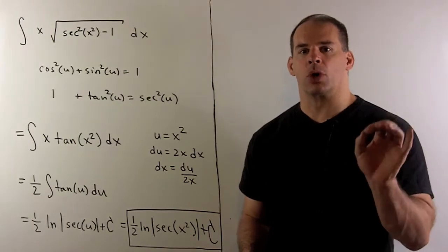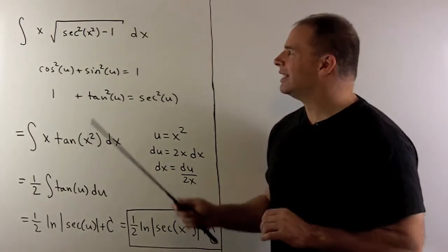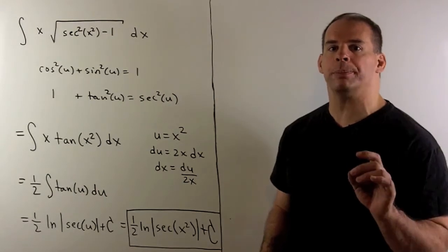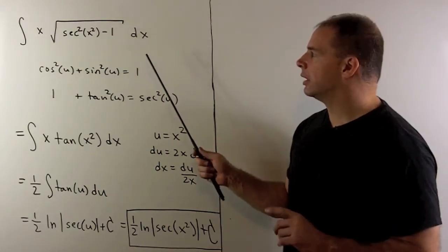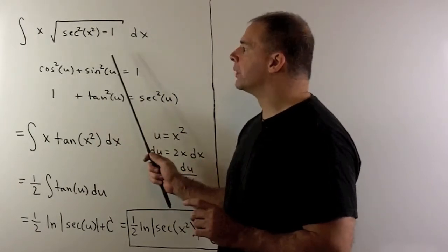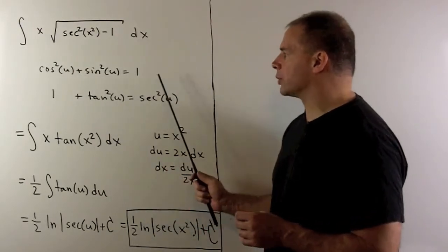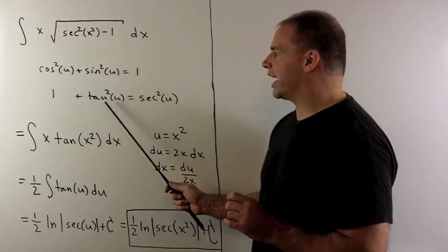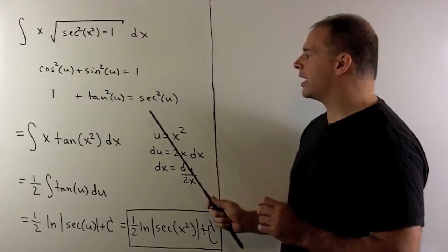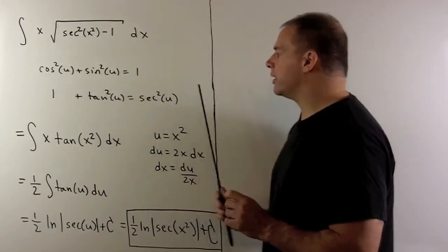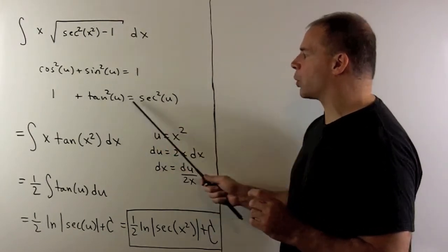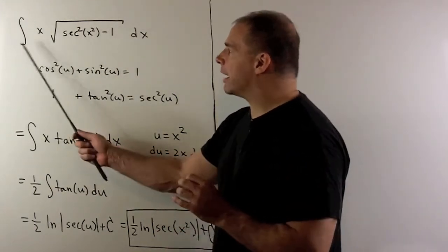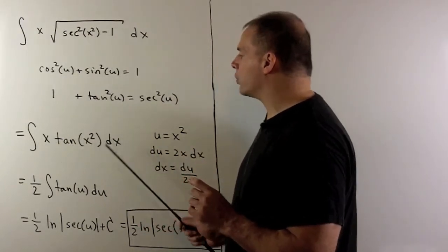Finally, let's look at a u-substitution that works with a trig identity useful when dealing with tangent and secant. The indefinite integral of x times the square root of secant squared of x squared minus one, with respect to x. We know we want to work tangent in here somehow. We start with cosine squared plus sine squared equals one, then divide through by cosine squared. We get one plus tan squared equals secant squared. Pushing the one to the other side gives us secant squared minus one equals tan squared. Taking the square root of tan squared is just tan. So our integral becomes the indefinite integral of x times tan of x squared with respect to x.